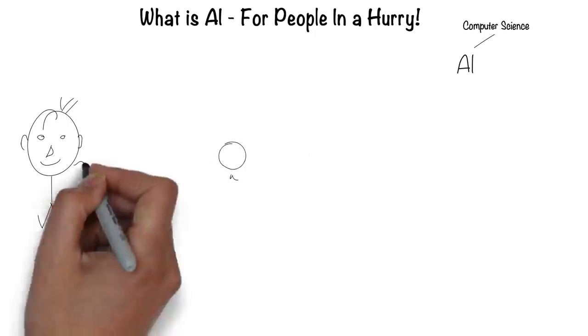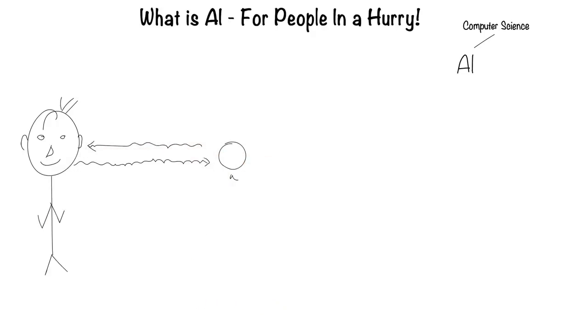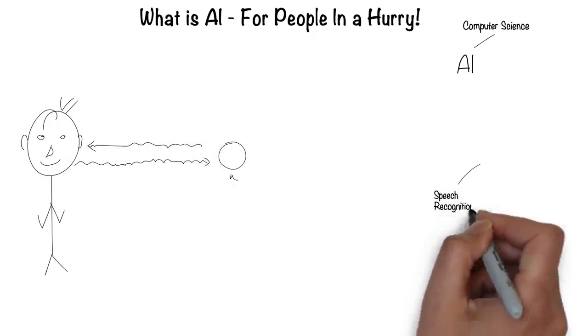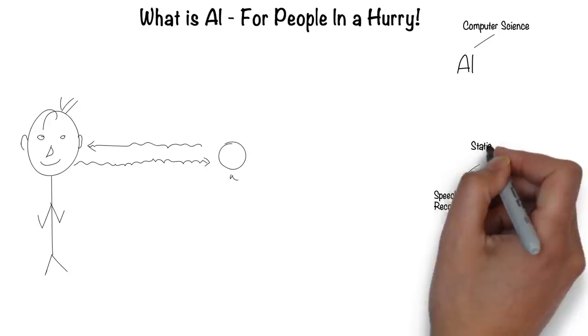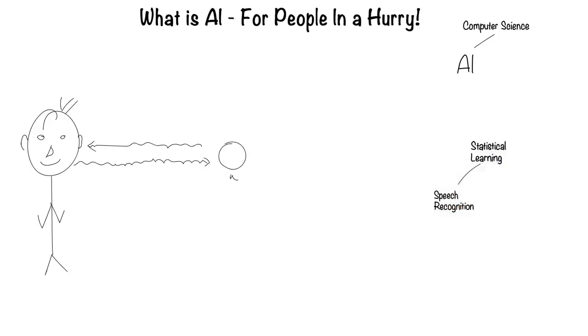Humans can speak and listen to communicate through language. This is the field of speech recognition. Much of speech recognition is statistically based — hence, it's called statistical learning.